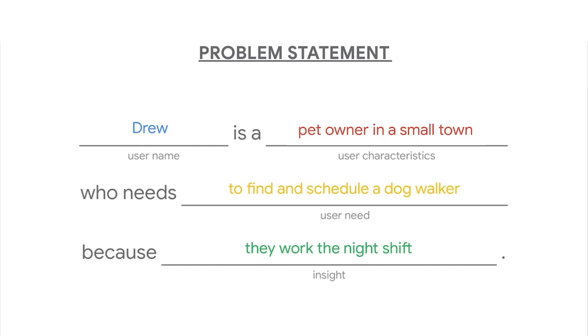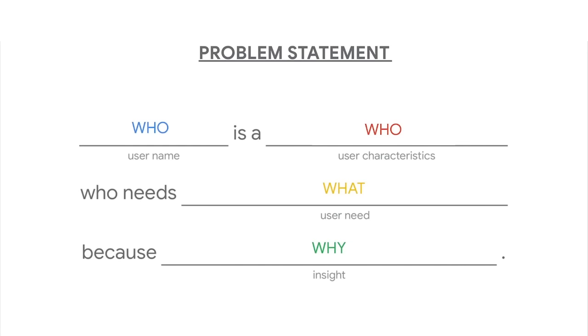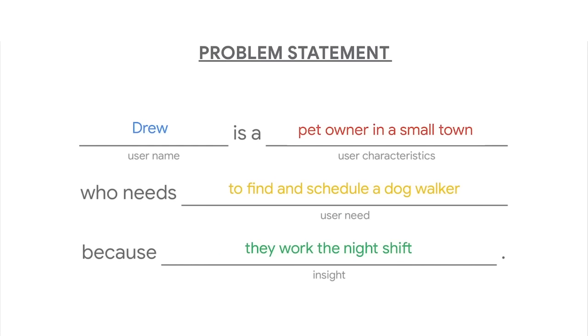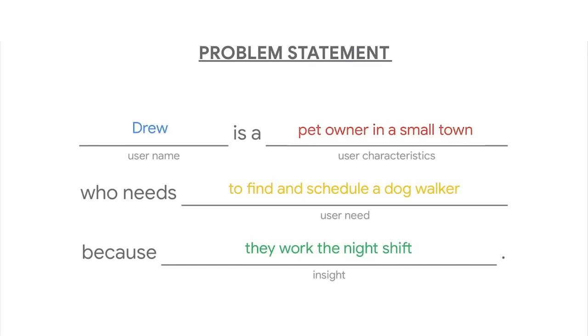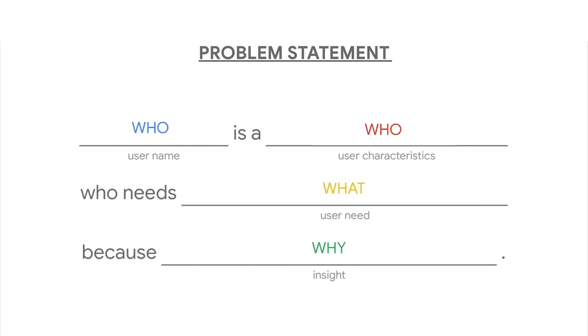Now let's connect the dots. The first part — Drew is a pet owner in a small town — describes the user our design will serve, informing the who of our goal statement. The second part — find and schedule a dog walker — describes the need our user is facing, guiding the what. The third part — because they work the night shift — is an insight informing our design. Our dog walker app helps people find care for their animals when they're at work or otherwise busy.